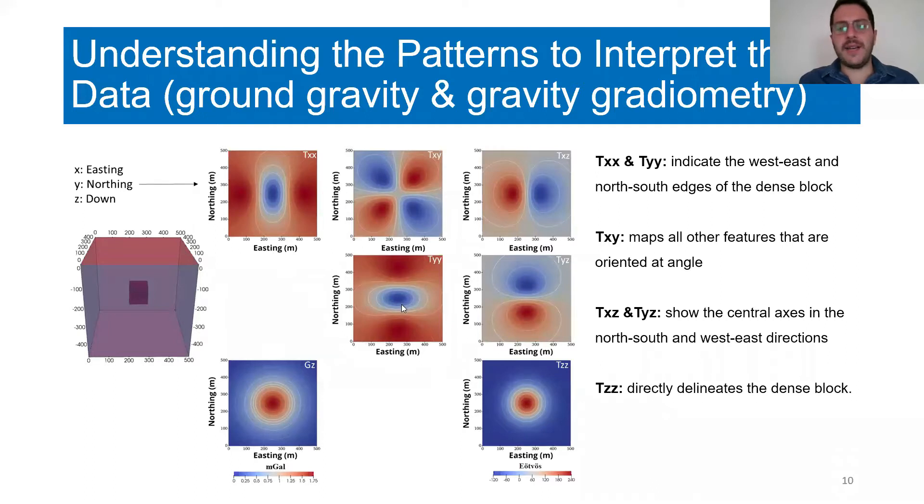Txx and Tyy indicate the west, east, and north, south edges of the block. Txy maps all other features that are oriented at an angle. And Txz and Tyz show the central axis in the north-south and east-west directions.